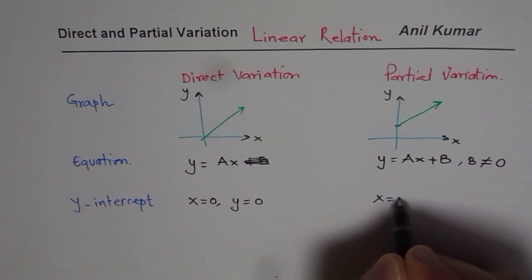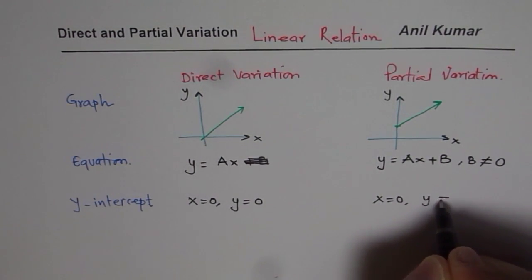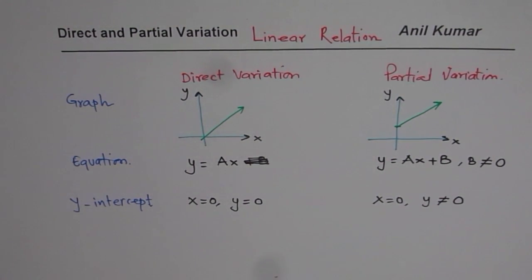But if x is equal to zero, but y is not equal to zero, then it means it is a partial variation, not direct variation.